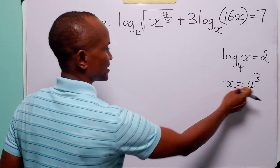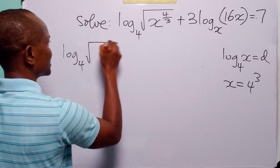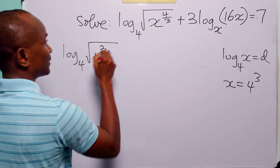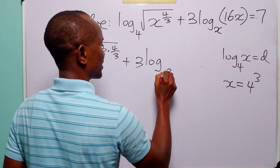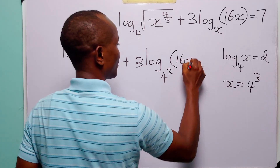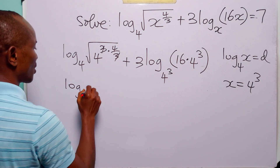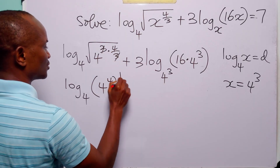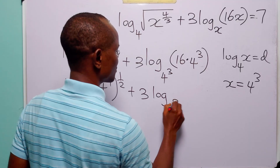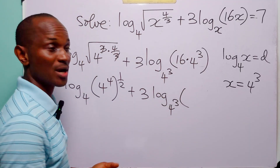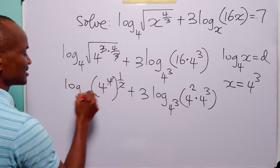Now to check our answer, let us substitute x equal to 4 to the power 3 into the original equation. When we do that, we have log to base 4 of the square root of 4 to the power 3, all to the power 4 over 3, plus 3 times log to base 4 to the power 3 of 16 times 4 to the power 3. Of course, 3 is going to cancel this. And we have log to base 4 of 4 to the power 4 to the power half — the half is because of the square root. Here we have plus 3 times log to base 4 to the power 3 of... 16 is 4 squared, so this is 4 to the power 2 multiplied by 4 to the power 3. This is going to divide that to leave 2.